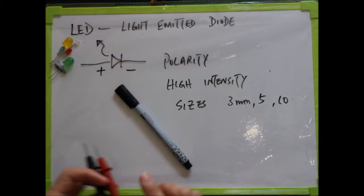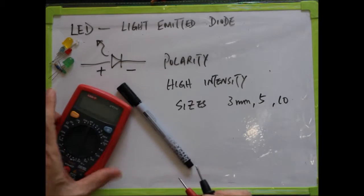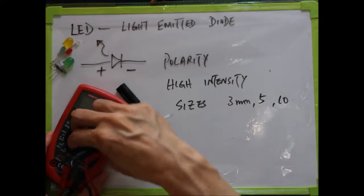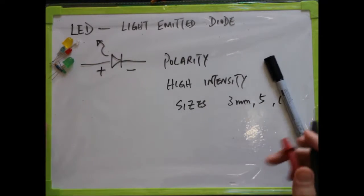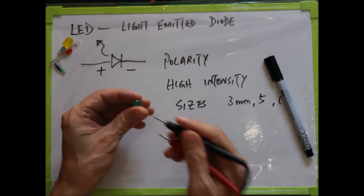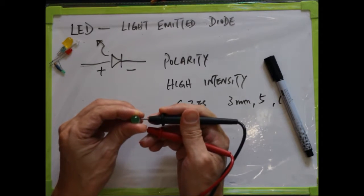Because we have polarity, I don't want you to connect wrong and burn your LED. So we will use a multimeter like this one. We switch to diode mode and measure the LED. This is a normal intensity LED.